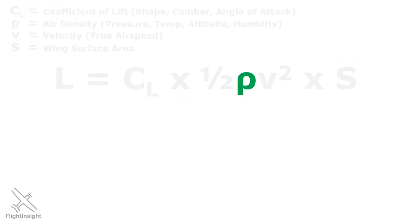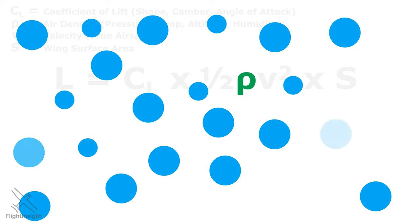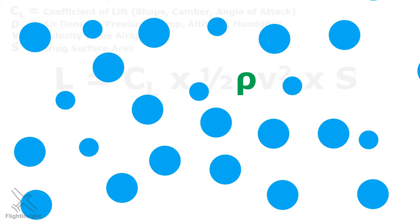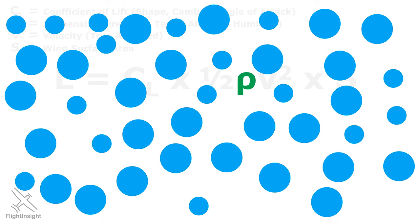The air density or rho is a measure of how many air molecules there are in a given space. In environments with lower air density, there are fewer molecules to be pushed down by the wing to generate lift, while at higher densities, the wing is able to push more air molecules down. A higher air density leads to an increase in lift.